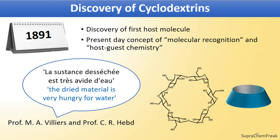In 1891, Villiers and Hebd isolated oligosaccharides produced by starch derivatives using the enzyme cyclodextrin glycosyl transferase. This material is presently called cyclodextrin and is an important host material in the field of host-guest chemistry. They named it cellulose, and Villiers noted that this dried material is very hungry for water.